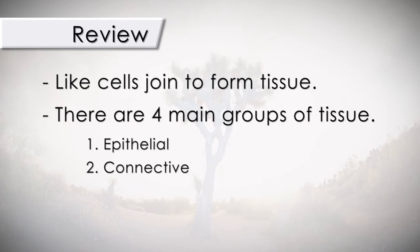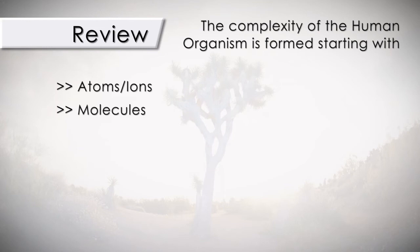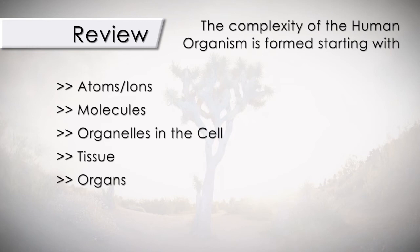The complexity of the human organism is formed starting with atoms or ions, which form molecules. Molecules make up the organelles of the cell; like cells join to form tissue; and tissue is what organs are made of. A group of organs working together make up an organ system, of which there are twelve. As we move on through this series, we will be covering each system in detail.